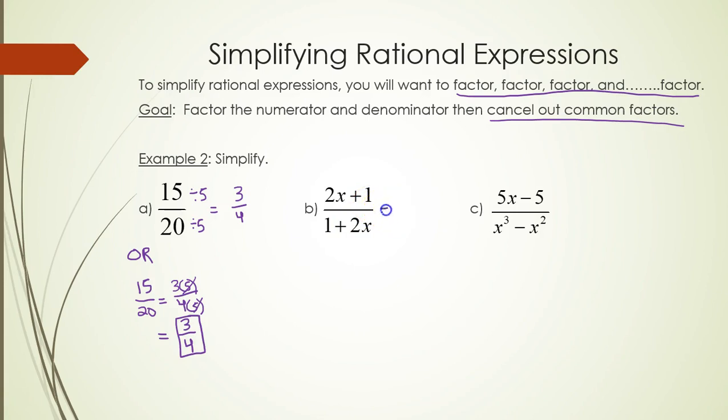In part B, you can rewrite addition in any order you want. So 2x plus 1 can be written as 1 plus 2x. This is also what's in the bottom. So anything divided by itself will always give you 1.